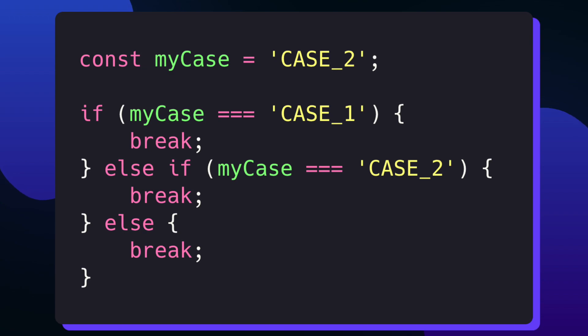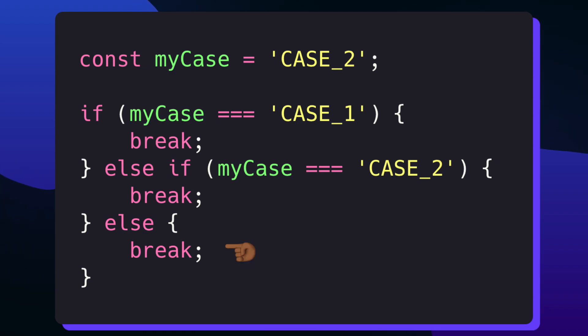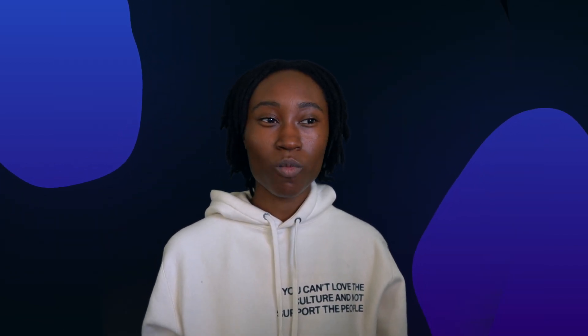We can convert this code block into an if-else statement to compare and contrast these two conditional logic flows. Here I have my if-else block where if case is equal to case_1, then I execute my logic, then I have else-if for case 2, and this can keep going on. Then I have my final else block as a catch-all if none of my cases match my expected values. These two code blocks achieve the same logical outcome, which may beg the question further of why would I want to use a switch statement over an if-else statement.